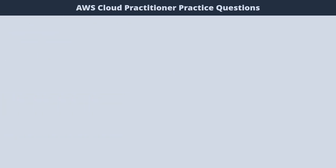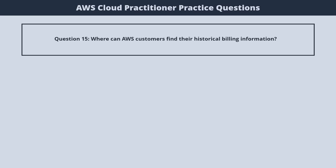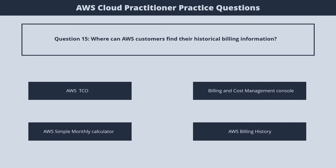Question 15. Where can AWS customers find their historical billing information? 1. AWS DCO. 2. Billing and Cost Management Console. 3. AWS Simple Monthly Calculator. 4. AWS Billing History. The correct answer is 2. Billing and Cost Management Console.